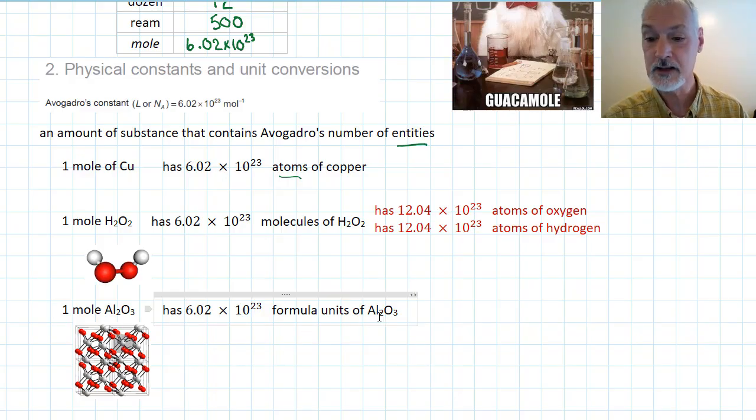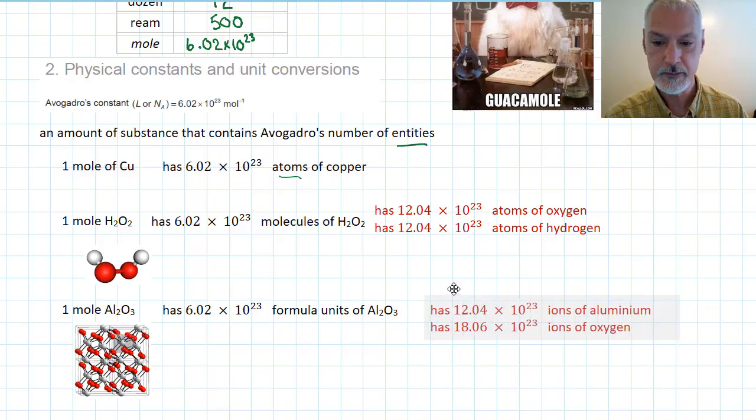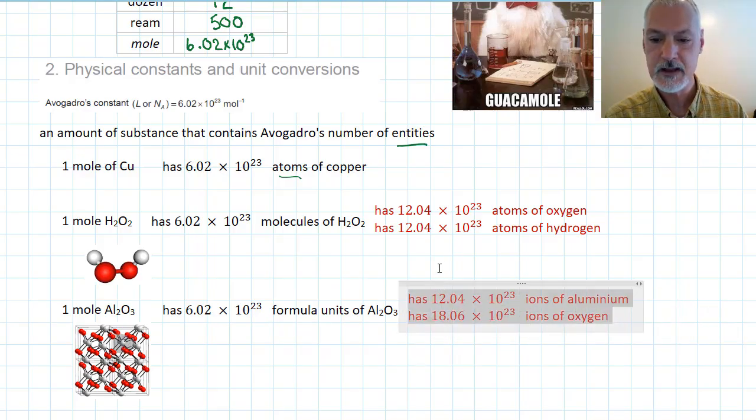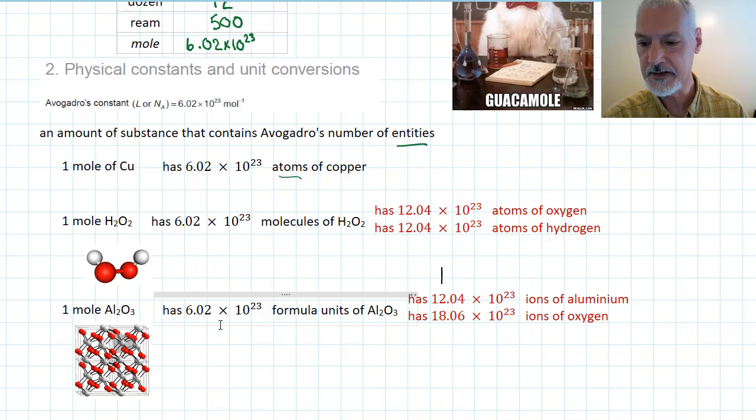But if I was asked how many aluminums are present in this one mole, well, there's two aluminums present in each mole and three oxygens present. So again, just as in the case above, if I was asked about how many atoms are present, I'd need to modify this number slightly to reflect the fact that there's two aluminum atoms in each formula unit and three oxygens in each one.